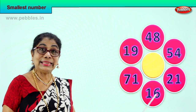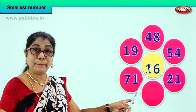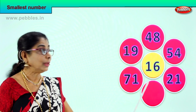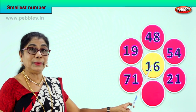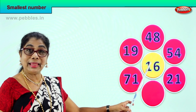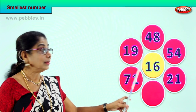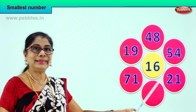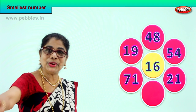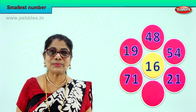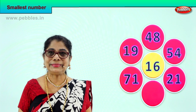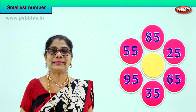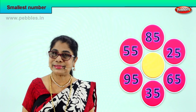We take 16 and put it in the middle — 1 ten and 6 ones — because 6 is smaller than 9. Did you enjoy finding the smallest number? Let's look at another set of numbers.